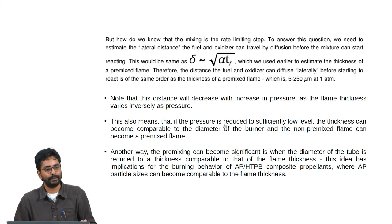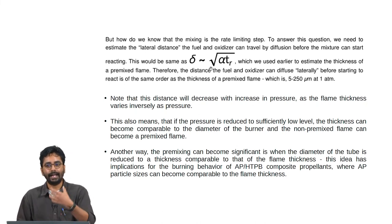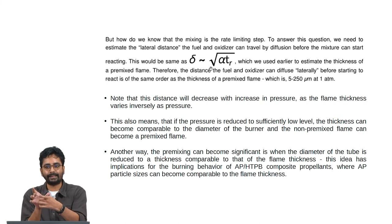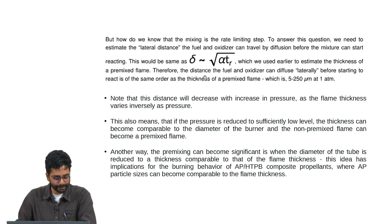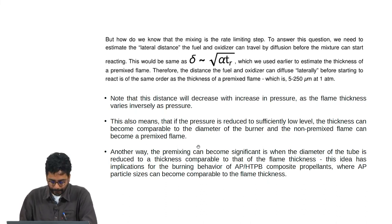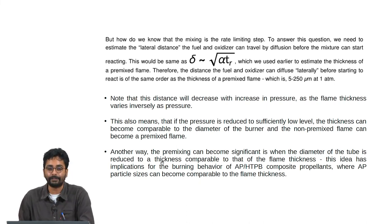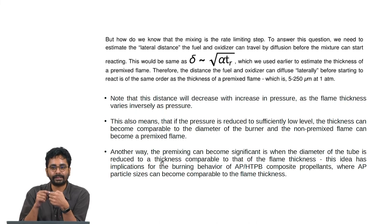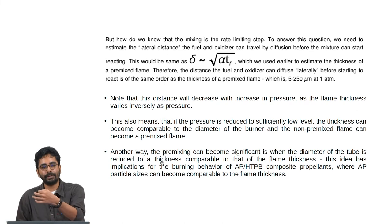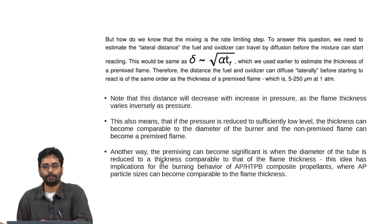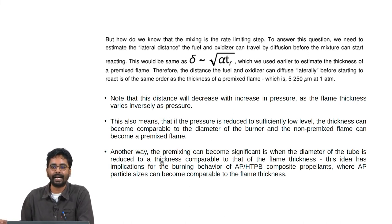There is another way to cause premixing without changing pressure: reducing the diameter of the tube to a scale comparable to the flame thickness. The flame thickness at one atmosphere is between 5 and 250 microns, so reducing the tube diameter to around 250 microns will result in significant premixing.